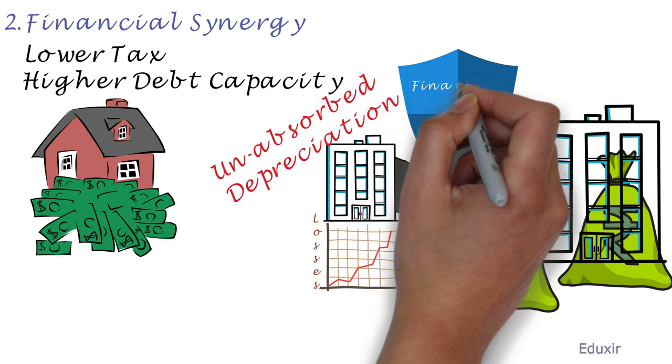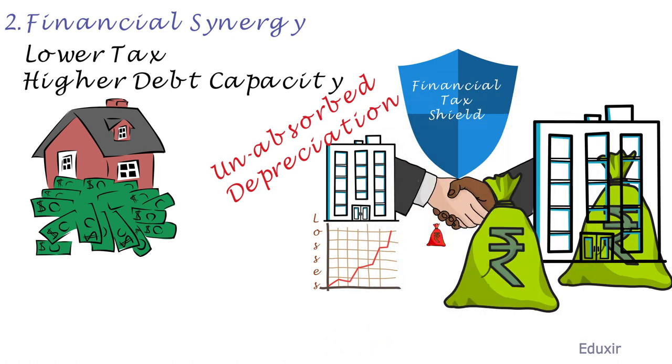By the way, for your information, tax shield is a decrease in the amount that can be paid as a tax for an individual or a corporation by claiming certain deductions such as tax, amortization, depreciation, medical expenses, and donations provided to the charities, etc.